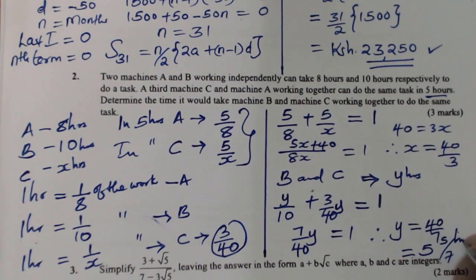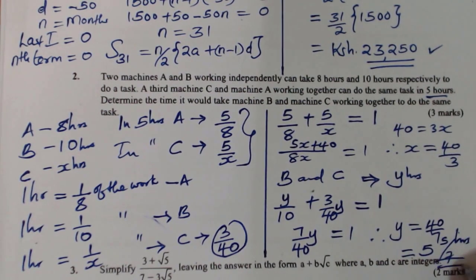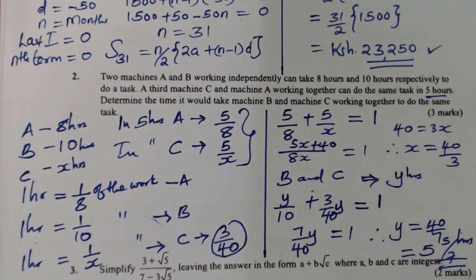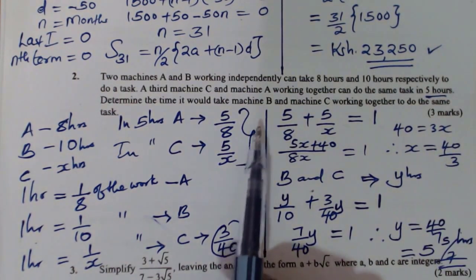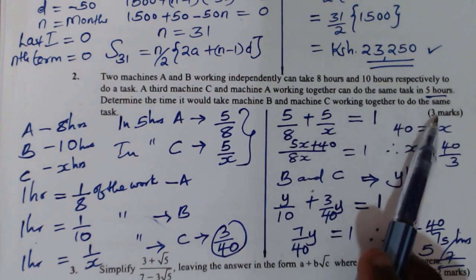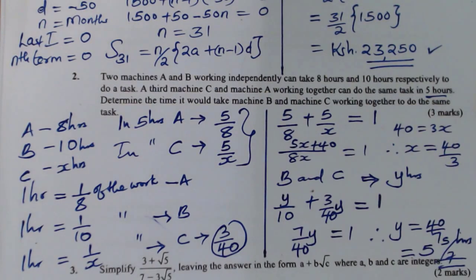So that is the time taken by machine B and C working together to do that job: 40 over 7 hours, or 5 and five-sevenths hours.